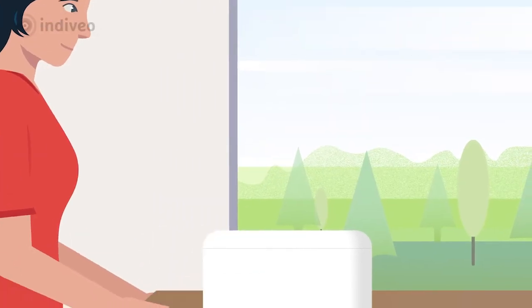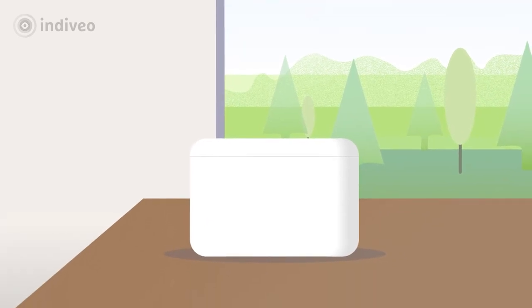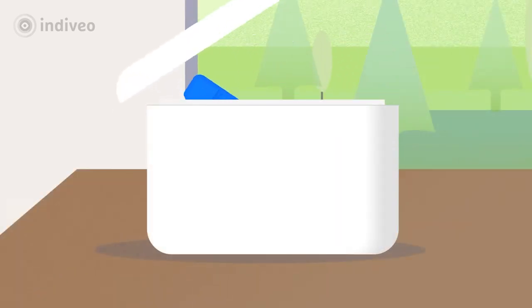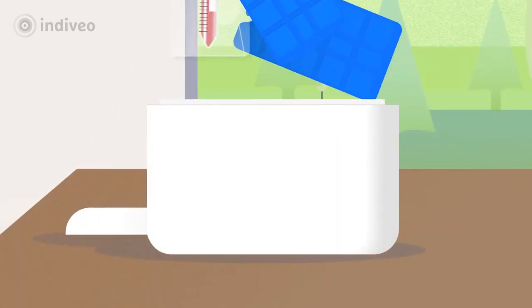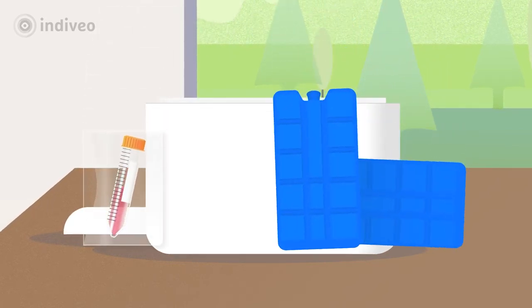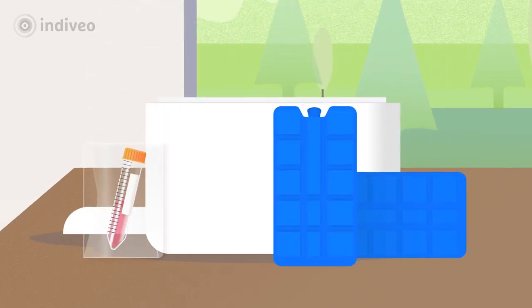After you have registered yourself, the UMCG will send you a special kit. The kit consists of a polystyrene box, including a small tube with cooling elements. The tissue or the fluid can be placed in the tube.